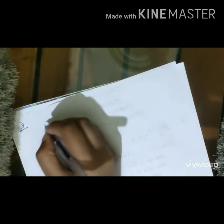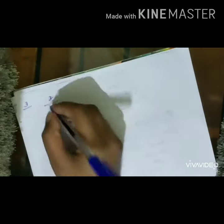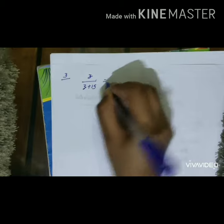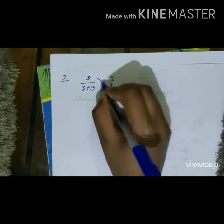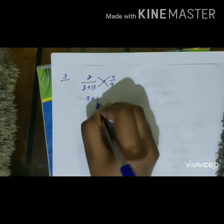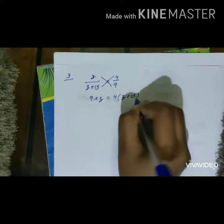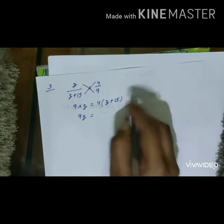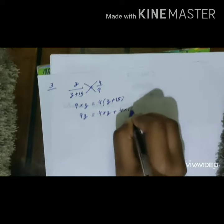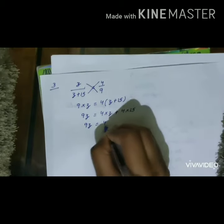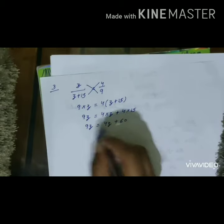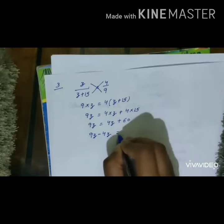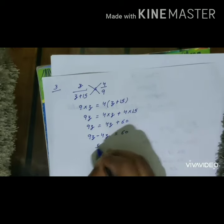Now let's continue to the third question: z / (z + 15) = 4/9. First, we will do the cross multiplication. After cross multiplication, we get 9 × z = 9z, and 4 multiplied by both terms (z + 15): 4 × z = 4z, plus 4 × 15 = 60. Now we need to transpose 4z to LHS. After transposing, 9z - 4z = 60, and 9z - 4z = 5z = 60.